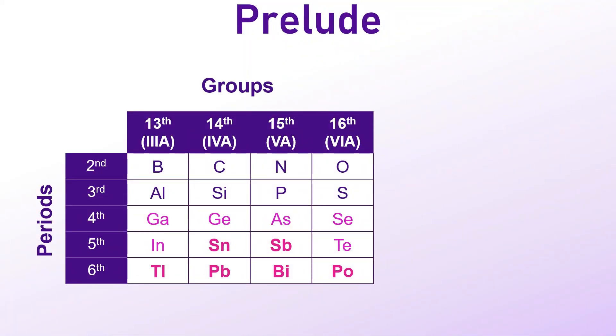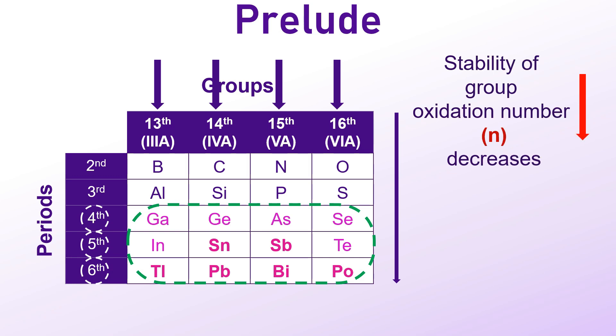It has been observed that some post-transition elements in the P-block, particularly those in the 4th, 5th and 6th periods of groups 13 to 16, tend to exhibit stable oxidation states that are 2 units lower than their expected group oxidation states. As we move down a group, the stability of the group oxidation state, represented by N, decreases,